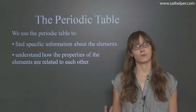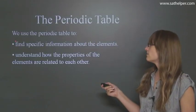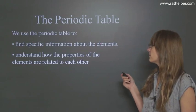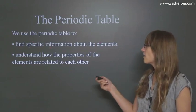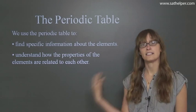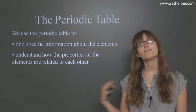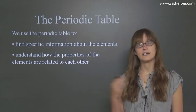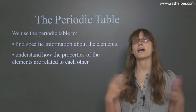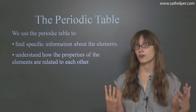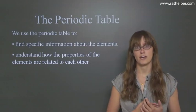So what do we use the periodic table for? We use it to find specific information about the elements and to understand how the properties of the elements are related to each other. So there's a lot of trends in the periodic table. It's not just random. We can find patterns and it's very important for you to understand those patterns for the AP exam.